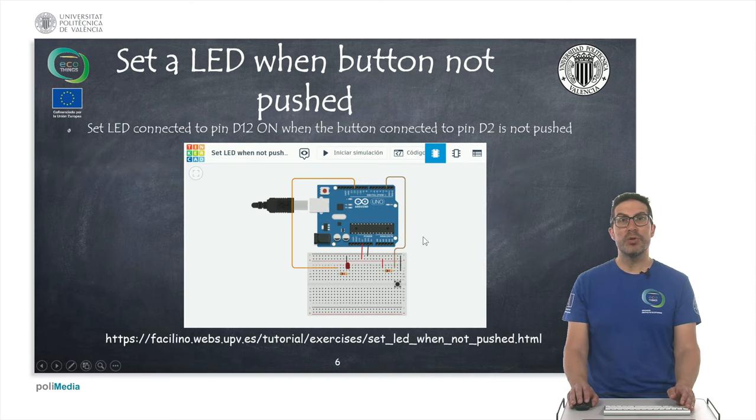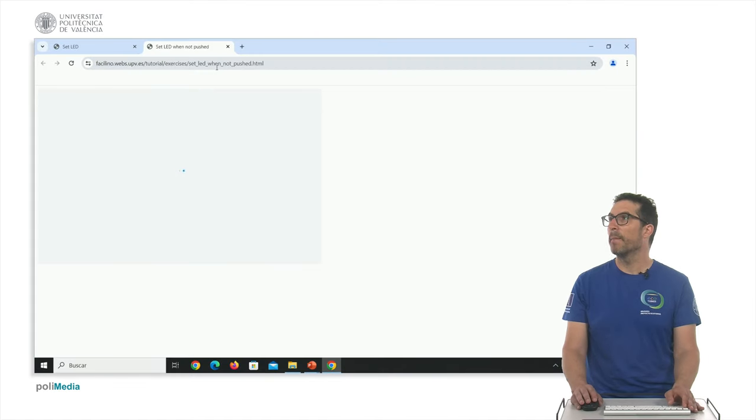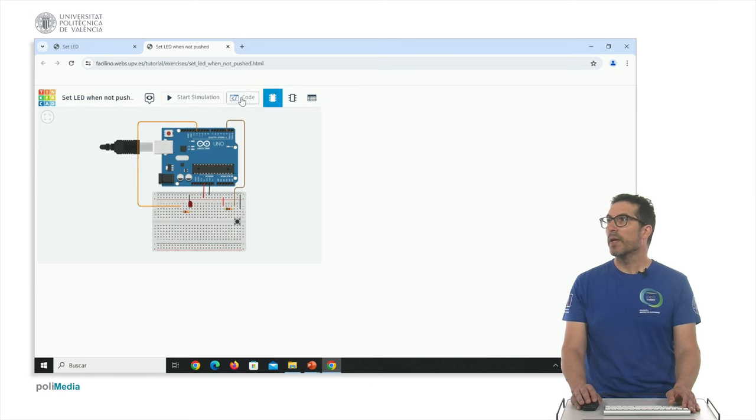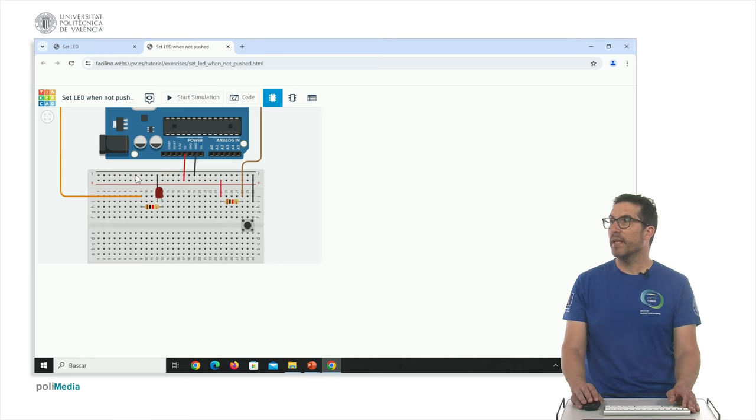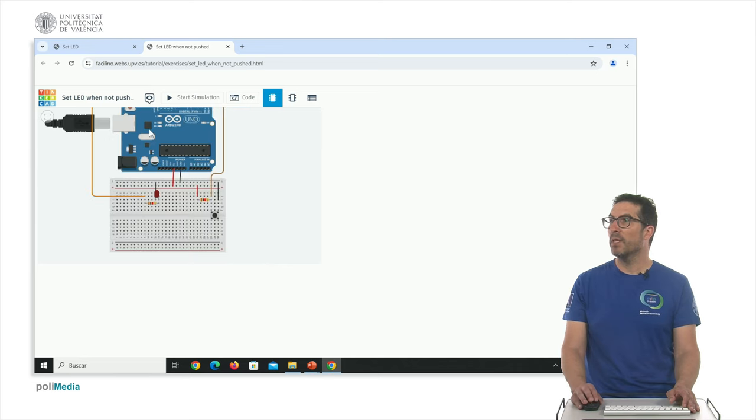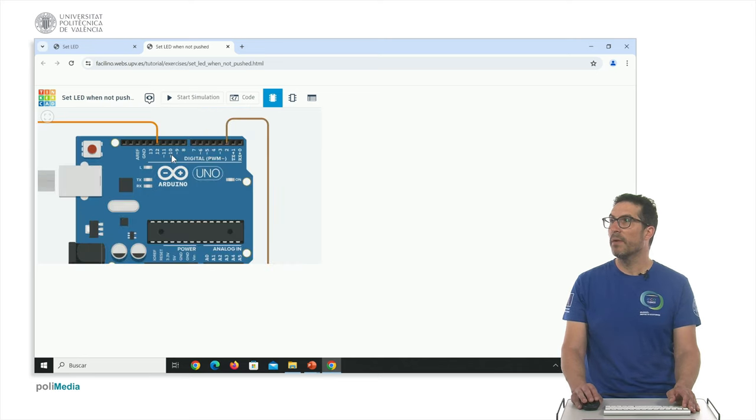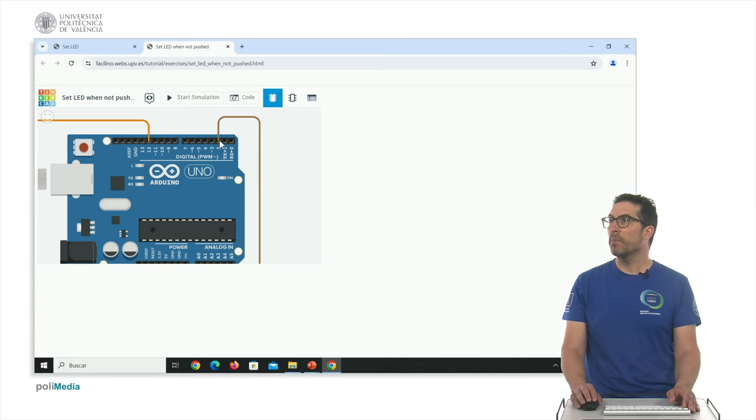Let me show you a live demo about this exercise. The code here, as you can see, we use the digital write instruction and digital read instruction. And here we have the LED connected to pin D12 as before, exactly as before. And connected to pin D2, we have a switch button through a resistor.